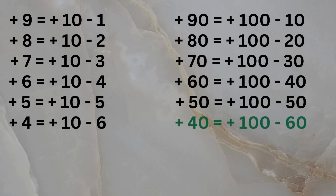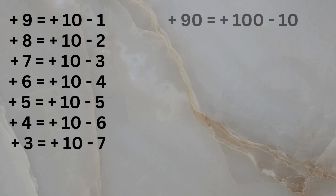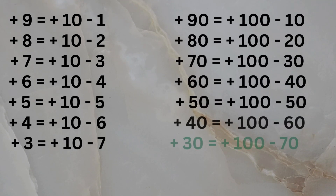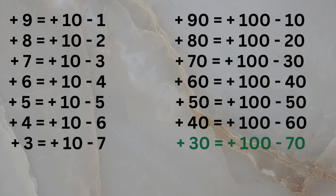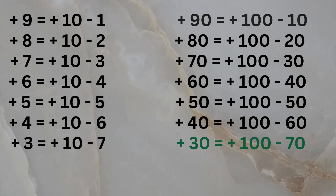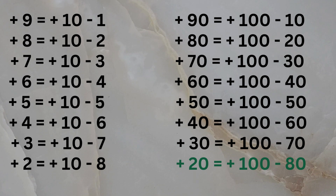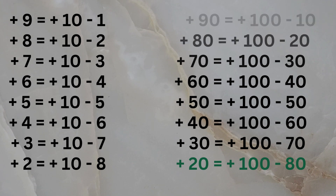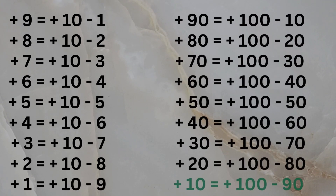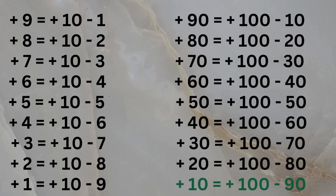The big friend formula for adding four when used on the tens and hundreds place becomes the big friend formula for adding three, then the big friend formula for adding two, and finally the big friend formula for adding one changes to this.